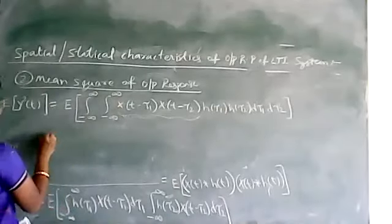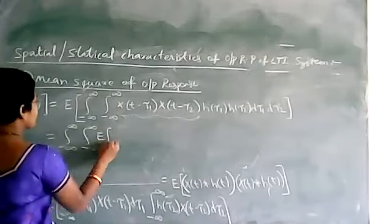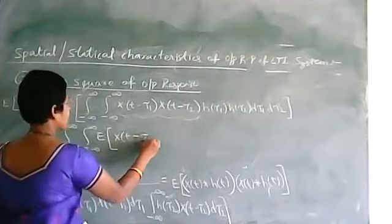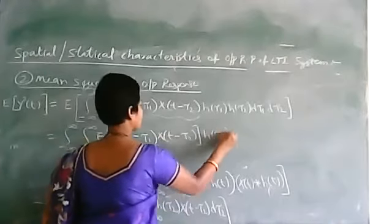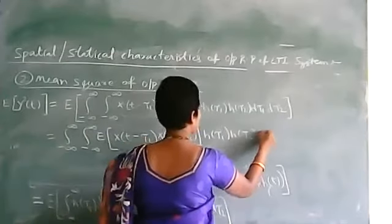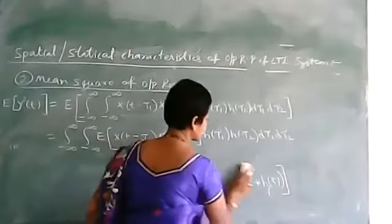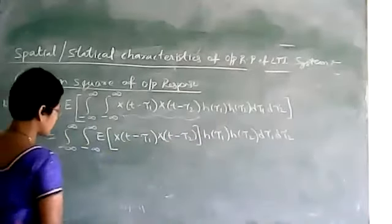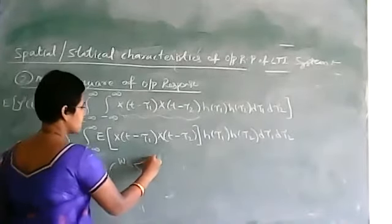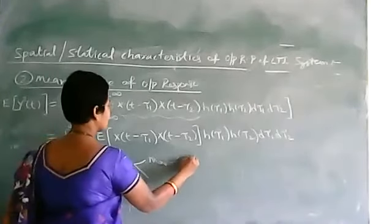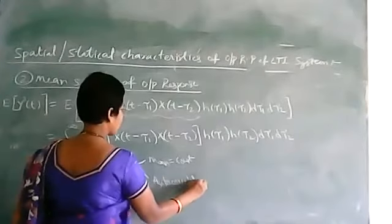Since the expectation operator is applied only to the random process, and h is not a random process, the expectation applies only to the x terms. So we get the double integral of E[x(t − τ₁) · x(t − τ₂)] · h(τ₁) · h(τ₂) dτ₁ dτ₂. Now, since x(t) is wide-sense stationary, the mean is constant and the autocorrelation is a function of τ only — it is not a function of t.